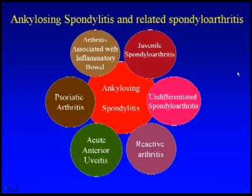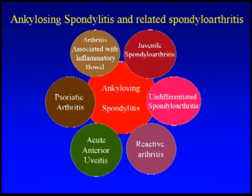Arthritis associated with inflammatory bowel disease refers to arthritis that occurs with Crohn's disease and with ulcerative colitis. The joint involvement, unlike psoriatic arthritis, tends to be more large joint involvement, such as knee, ankle, hip, or wrist. The arthritis affecting the spine in this subset tends to be, like ankylosing spondylitis, very symmetric, starting from the bottom of the spine and climbing upward, but tends to be less severe and does not tend to fuse the entire spine. The biggest difference is profound involvement of the gastrointestinal tract.